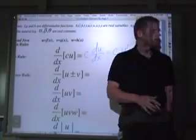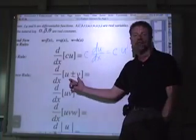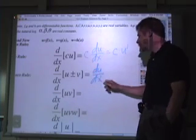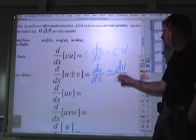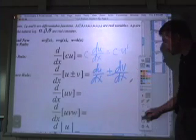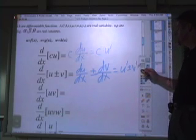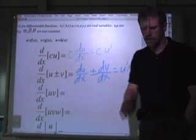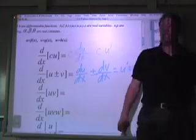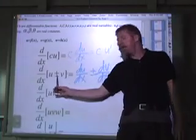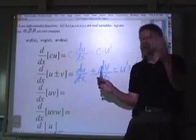Now let's take a look at the derivative of a sum or a difference. The derivative of a sum is the sum of the derivatives. We can write that as du/dx plus or minus dv/dx, or as u prime plus or minus v prime. When I say go, I'd like you to say out loud and in unison: the derivative of a sum is the sum of the derivatives. Ready? Go. The derivative of a sum is the sum of the derivatives. It applies to differences also.